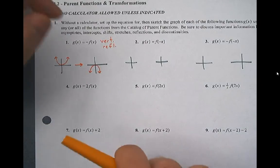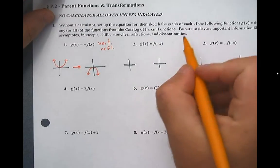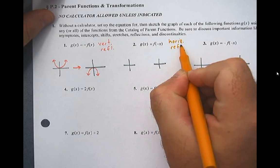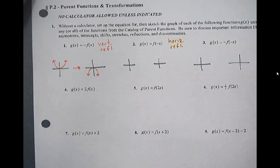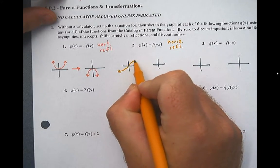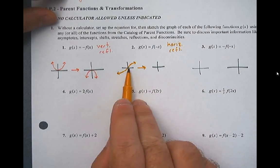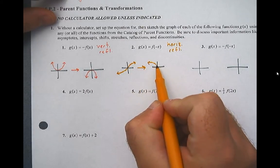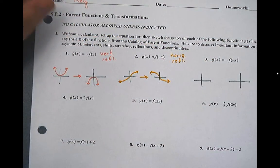G of x equals f of negative x. So this time there's a negative, so I know it's going to be a reflection, but the reflection is on the x. So this is going to be a horizontal reflection. I don't want to pick x squared again because if I reflect horizontally, I'm going to get the exact same picture. So this time I'm going to use the cube root graph — that's the parent function. When I do the transformation, all the negative x's are going to become the positive x's and vice versa. It does not have to be perfect — you just have to have a basic shape drawn.